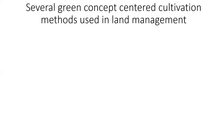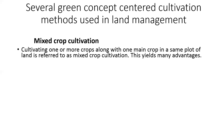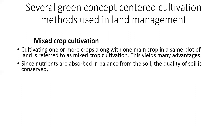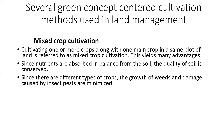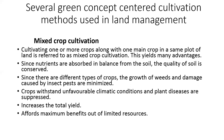Now we will find out several green concept-centered cultivation methods used in land management. Mixed crop cultivation: cultivating one or more crops along with one main crop in the same plot of land. This yields many advantages — since nutrients are absorbed in balance from soil, the quality of soil is conserved; different types of crops minimize weed growth and damage by insect pests; crops withstand unfavorable climatic conditions; plant diseases are suppressed; total yield increases; and maximum benefits are obtained from limited resources.